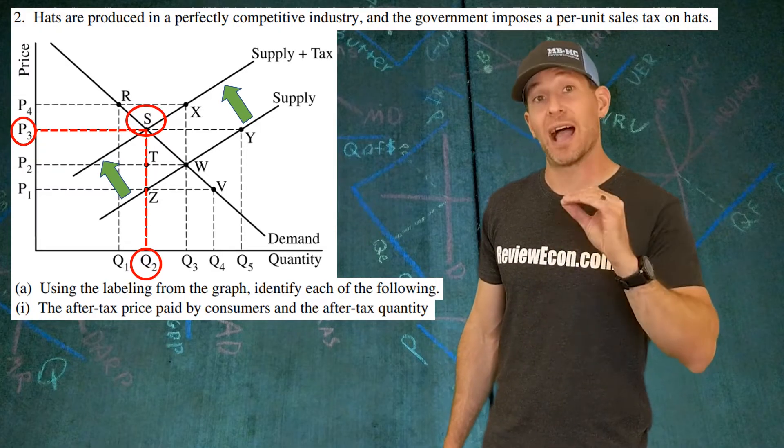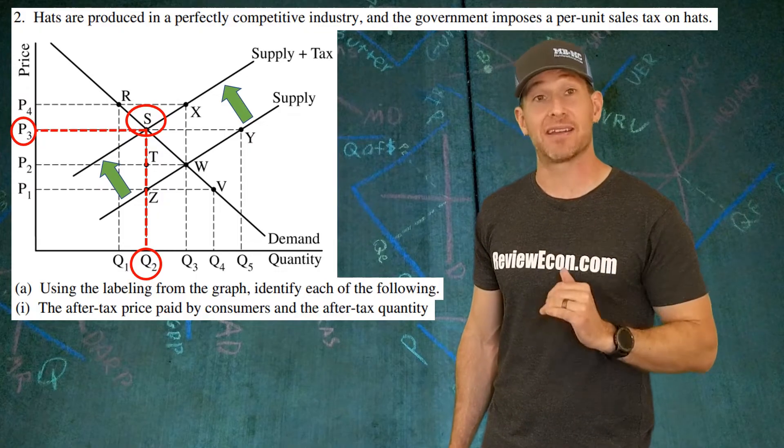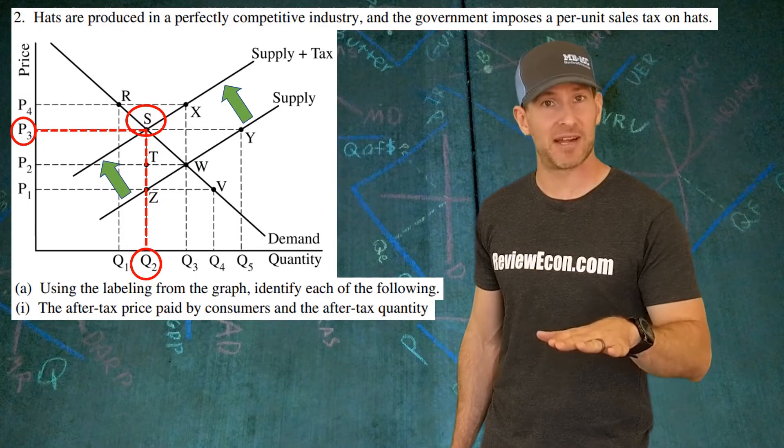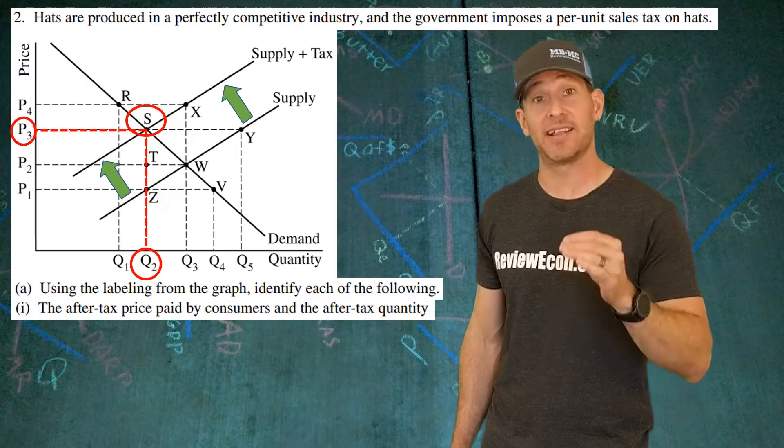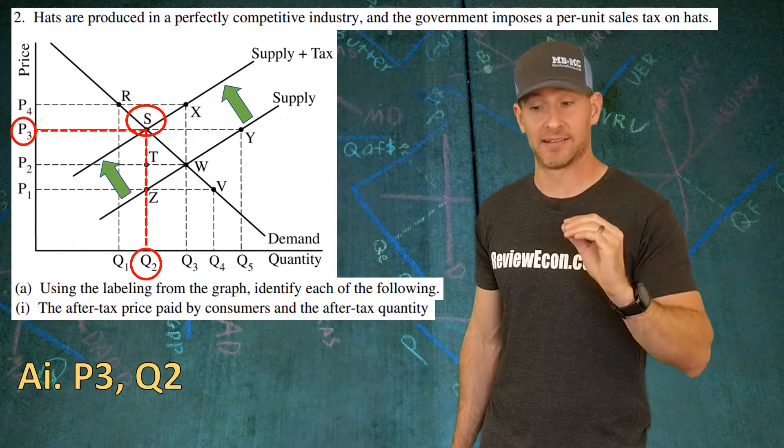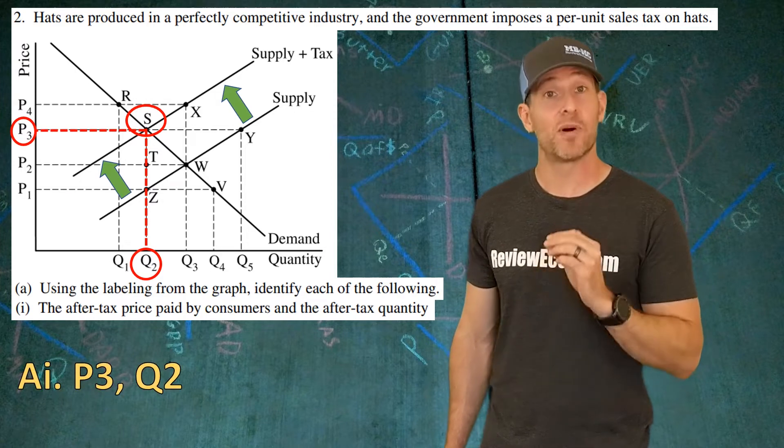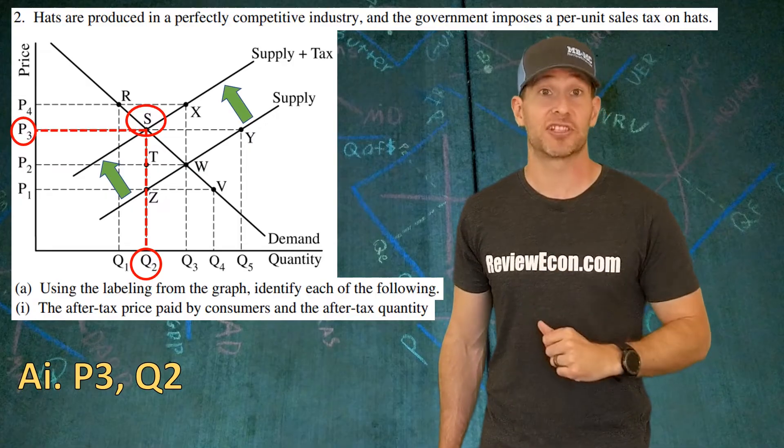The producers will actually receive a lower price down at P1, but we don't have to identify that here. We're identifying the price at the new equilibrium that is P3 and Q2 being the quantity. You identify both of those, and you've got yourself a point here.